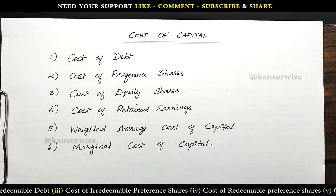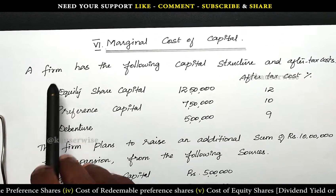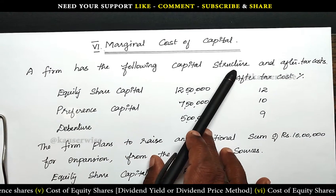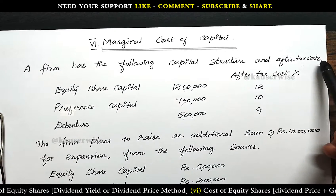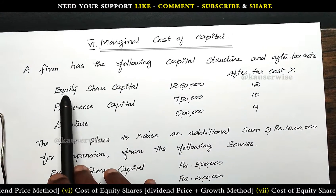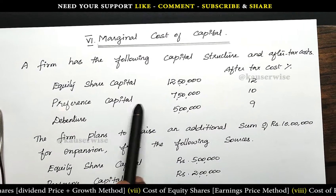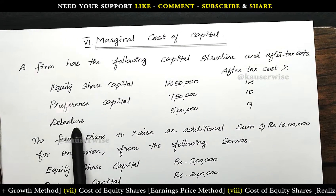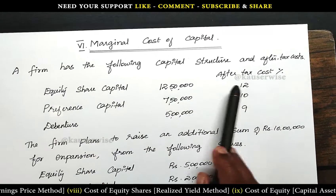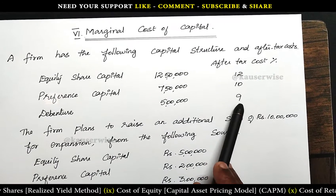Marginal cost means additional capital. A firm has the following capital structure and after tax cost. The present capital structure of the company is: equity share capital 12,50,000; preference share capital 7,50,000; debentures 5,00,000. The after tax cost percentages are: equity 12%, preference 10%, debentures 9%.